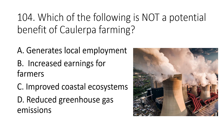Question 104. Which of the following is not a potential benefit of Caulerpa farming? A. Generates local employment B. Increased earnings for farmers C. Improved coastal ecosystems D. Reduced greenhouse gas emissions. The answer is D. Reduced greenhouse gas emissions.